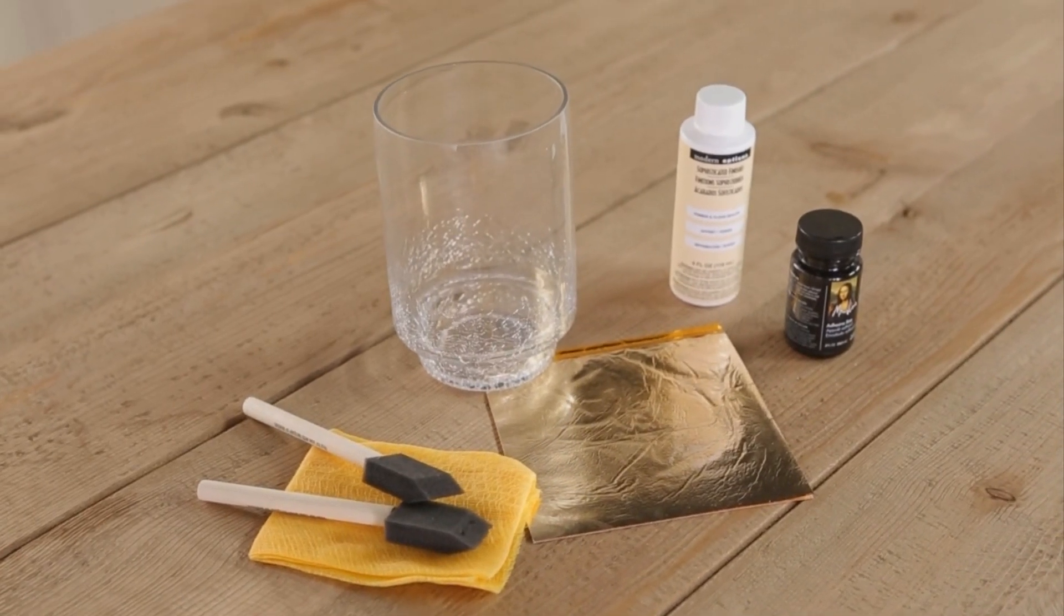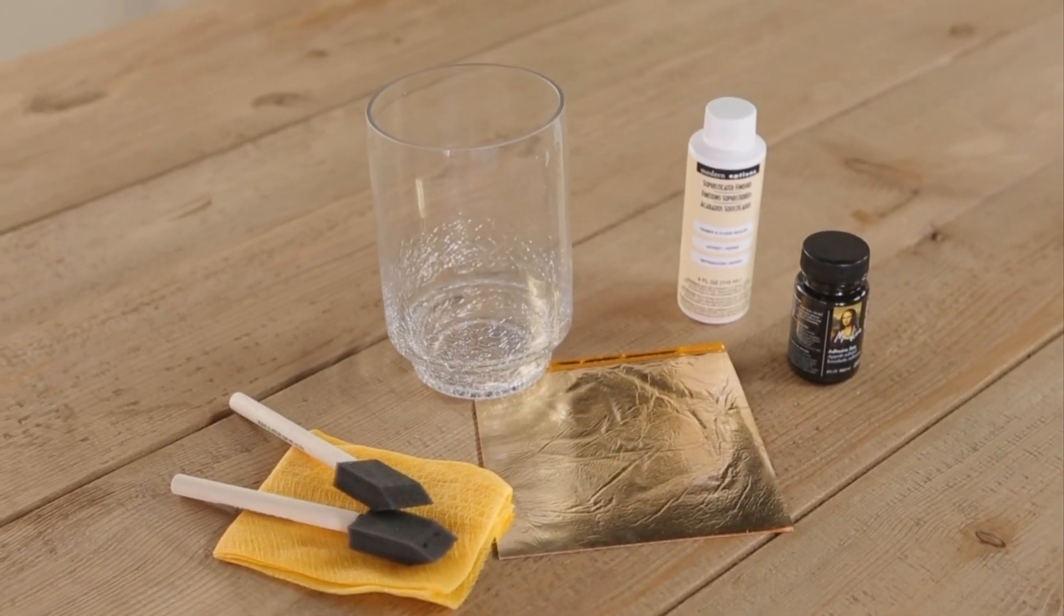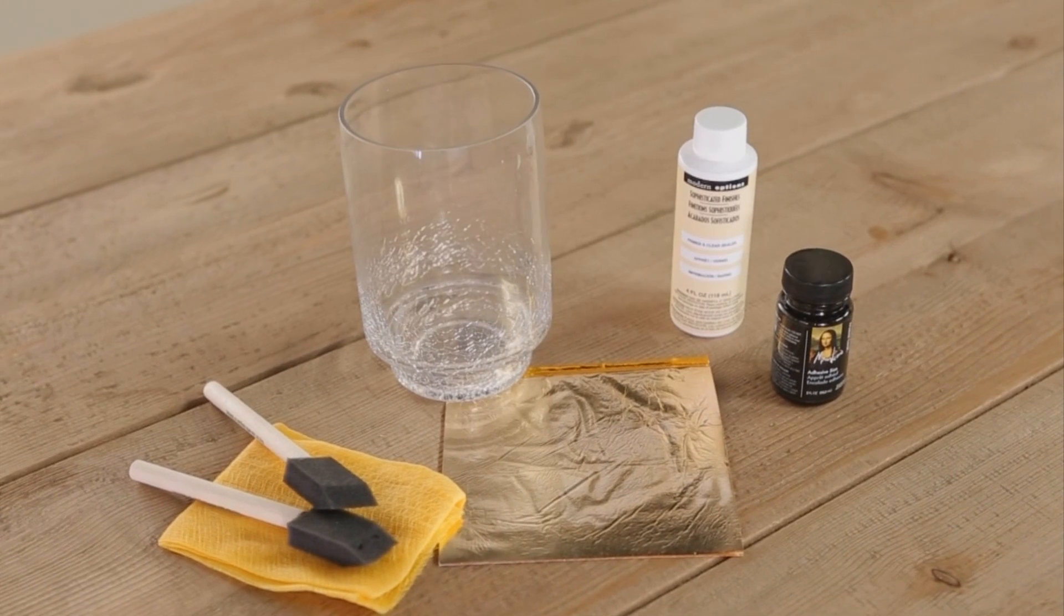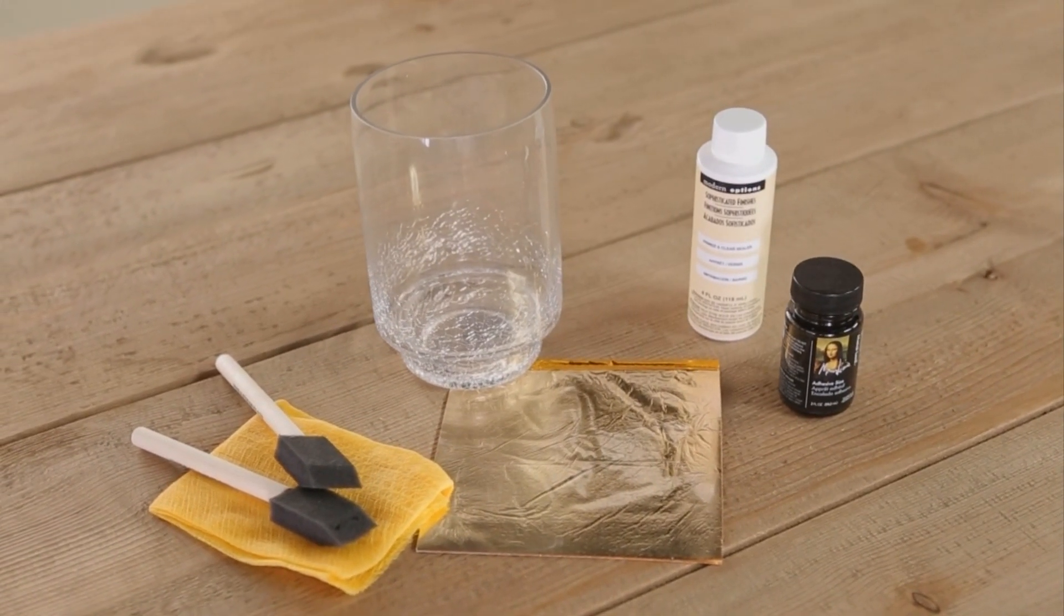The object you'd like to gold leaf. We're using a vase, tack cloth, gold leaf adhesive, two foam brushes, gold leaf sealer, and sheets of gold or silver leaf.